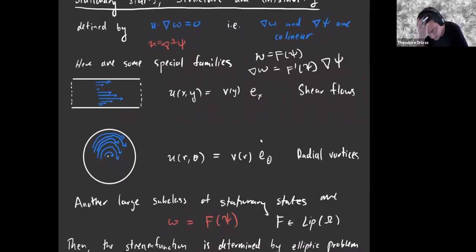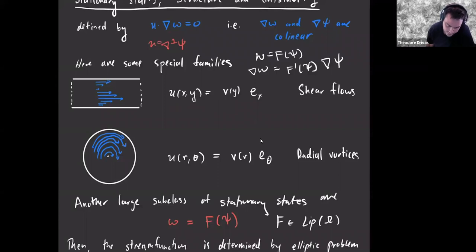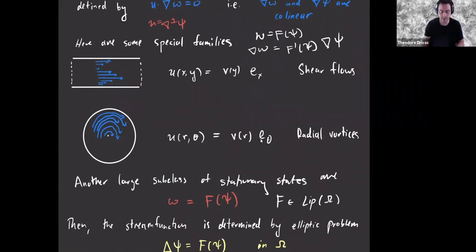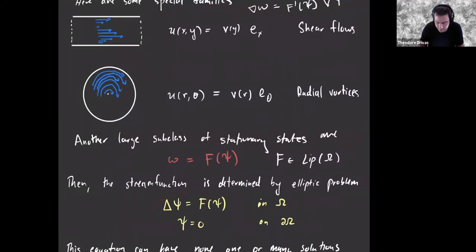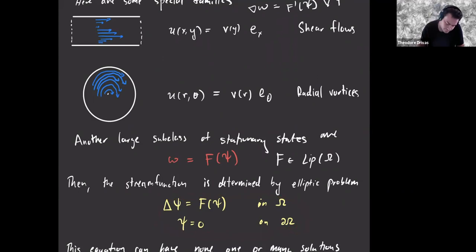Some examples: on the periodic channel you have shear flows — flows moving down the channel whose amplitude varies as a function of distance from the wall. On a disk you have radial vortices. Finally, you can identify a class of steady states by declaring some functional relationship between vorticity and stream and then demanding that the Euler equation be satisfied — that is, the Laplacian of C equals f(C) with zero boundary condition. As long as you can solve this problem, you've identified a stationary state.